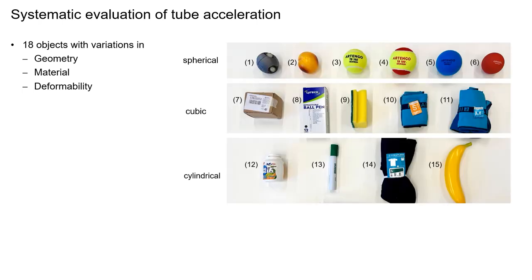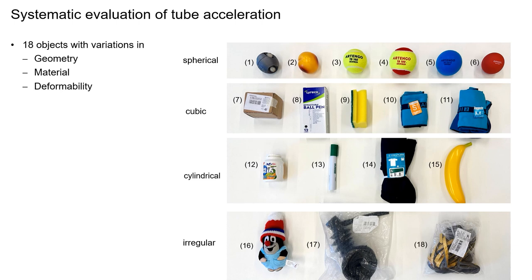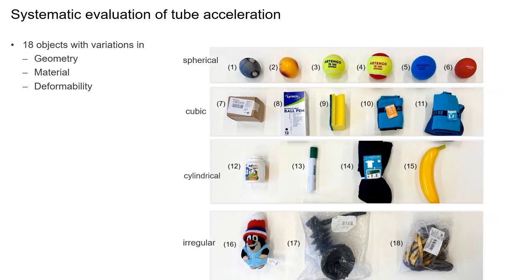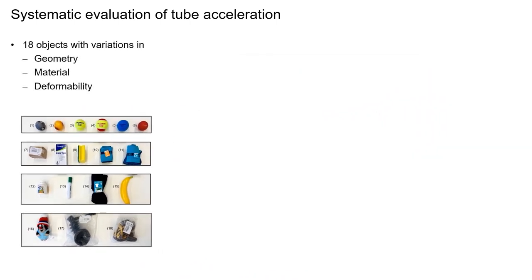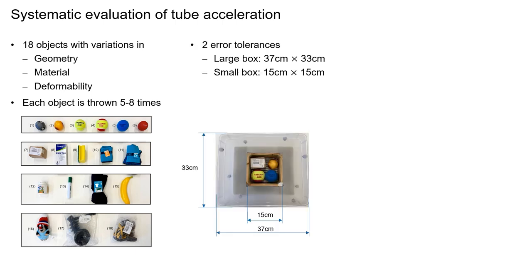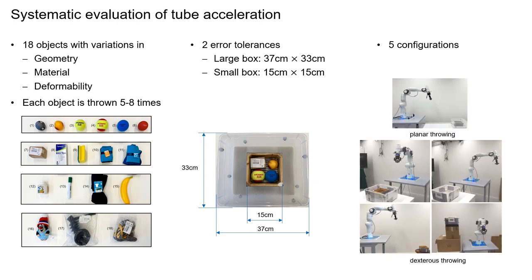We conducted a systematic evaluation of our robust throwing method. Our setup includes a collection of 18 objects with variations in geometry, material, and deformability — arguably the most diverse set in the literature to date. Each object is thrown five to eight times to account for instance-level uncertainties. The target box is designed with two levels of error tolerance, and five configurations were tested, including a common planar throwing configuration as well as four distinct dexterous throwing configurations.